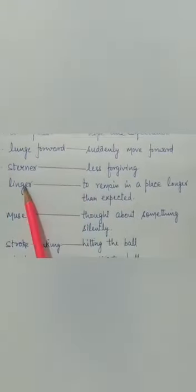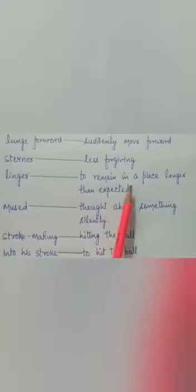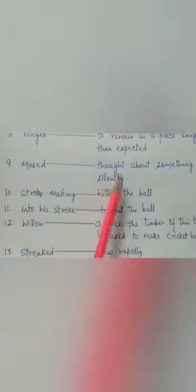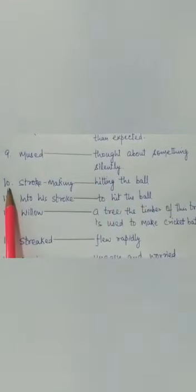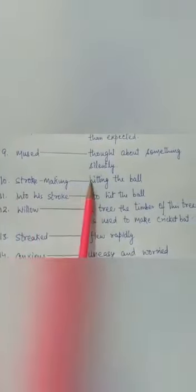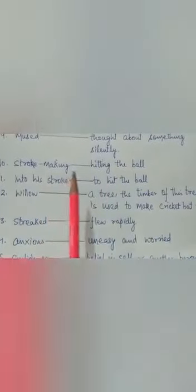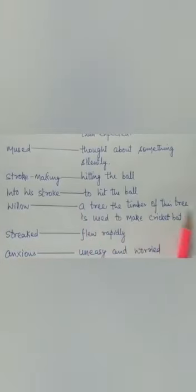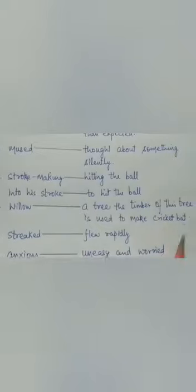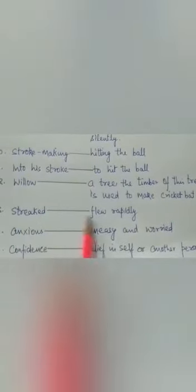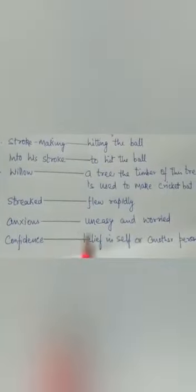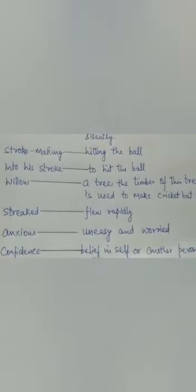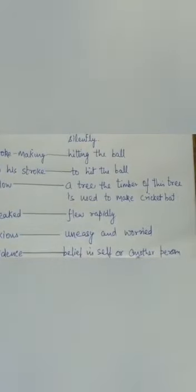Sterner means less forgiving. Linger means to remain in a place longer than expected. Mused means thought about something silently. Stroke making means hitting the ball. Into his stroke to hit the ball. Willow is a tree. The timber of this tree is used to make cricket bat. Then street means flew rapidly. Anxious means uneasy and worried. Then the last one is confidence, belief in self or another person.